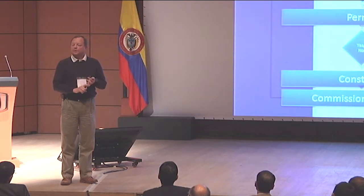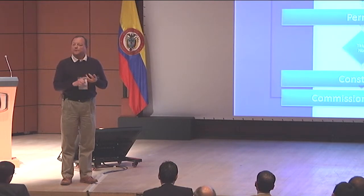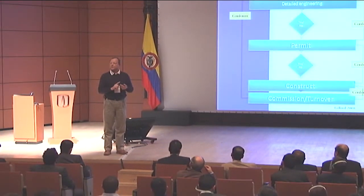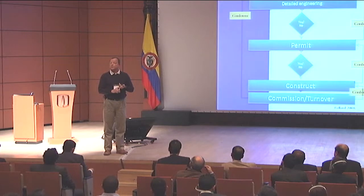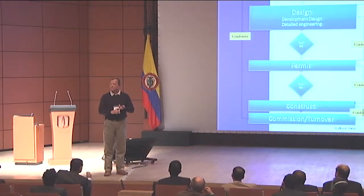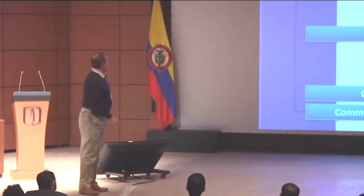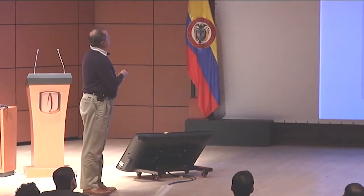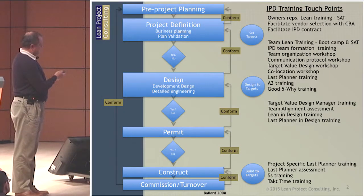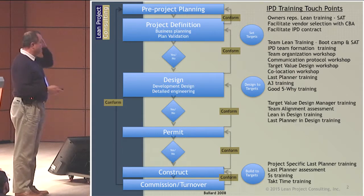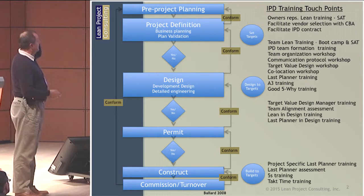In the end, you have projects that don't deliver the value originally intended. They are more expensive than they need to be, delivered unreliably, and we hurt and kill too many people. That's the traditional scene. What we're saying in integrated project delivery — back to basics: setting the target, designing the target, and building the target.